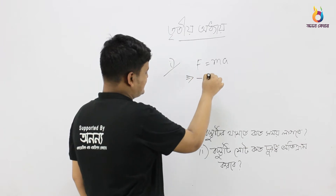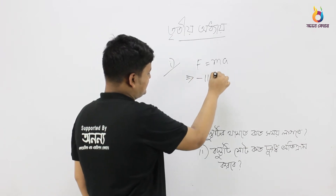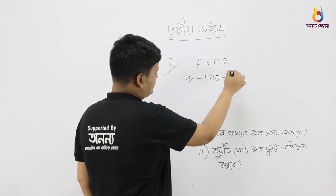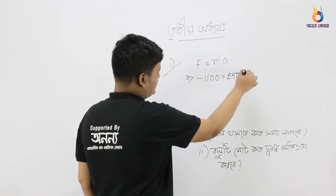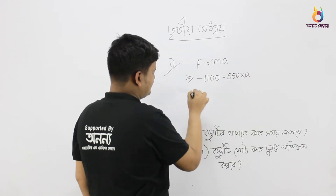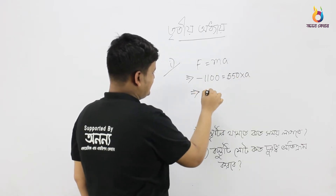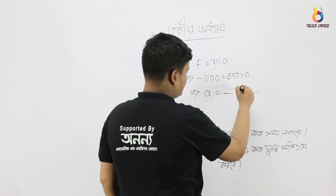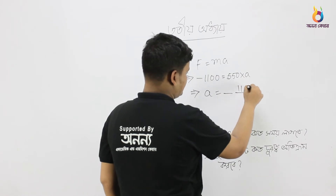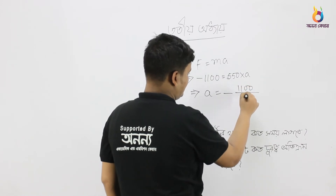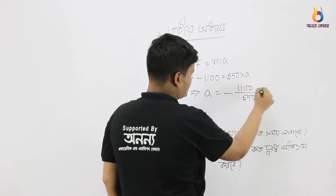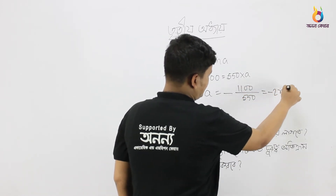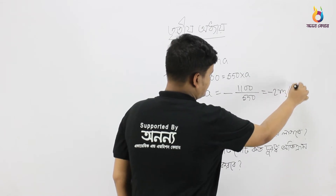For the first part: F is equal to minus 11,000 N, and mass is equal to 5500 kg. This implies a is equal to minus 11 divided by 55, which is equal to minus 2 meters per second squared.